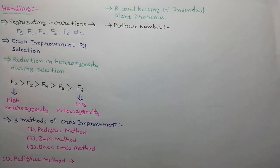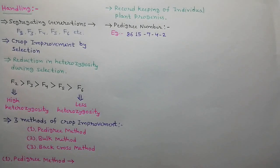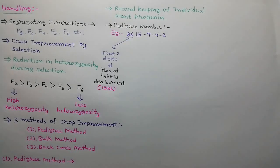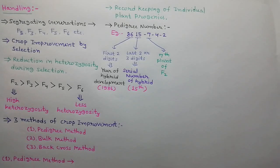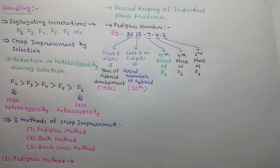For keeping records, pedigree numbers are given to each hybrid plant. For example, a pedigree number is 8615-7-4-2. Here the first two digits 86 show the year in which the hybrid is developed, meaning 1986. The last two or three digits, here 15, show the serial number of the hybrid. The next digit 7 shows the hybrid is the seventh plant of F2 generation. The next digit 4 shows it is the fourth plant of F3 generation, and the next digit 2 shows it is the second plant of F4 generation.